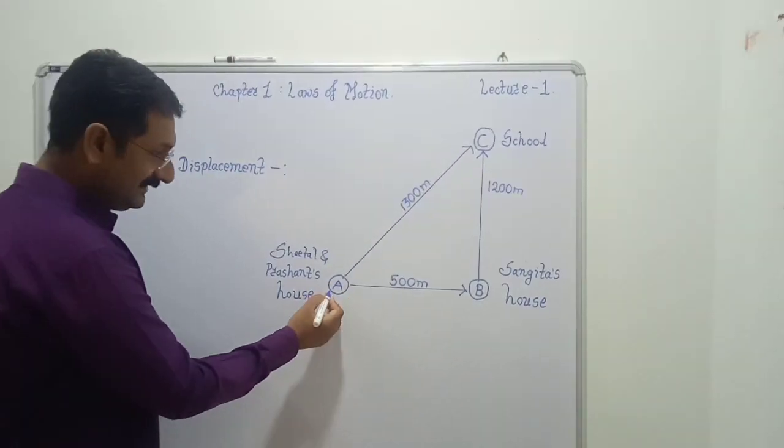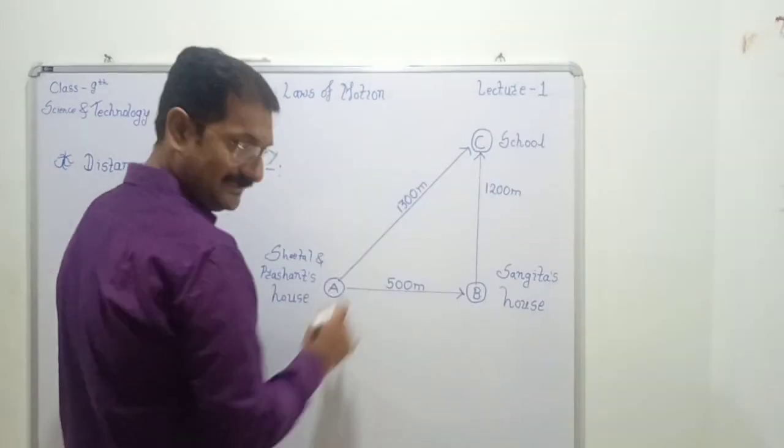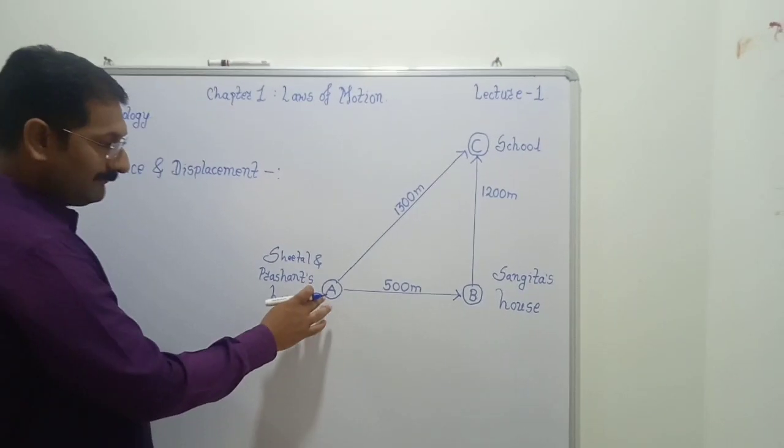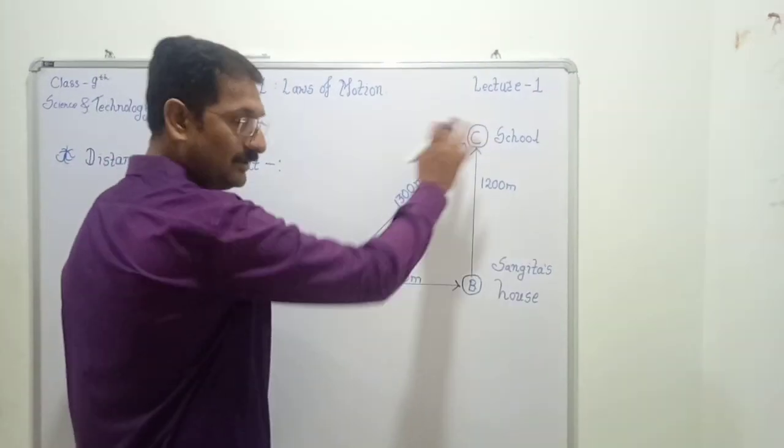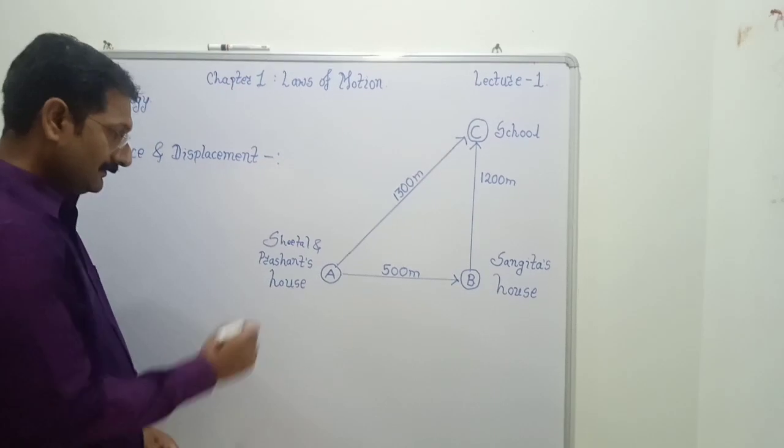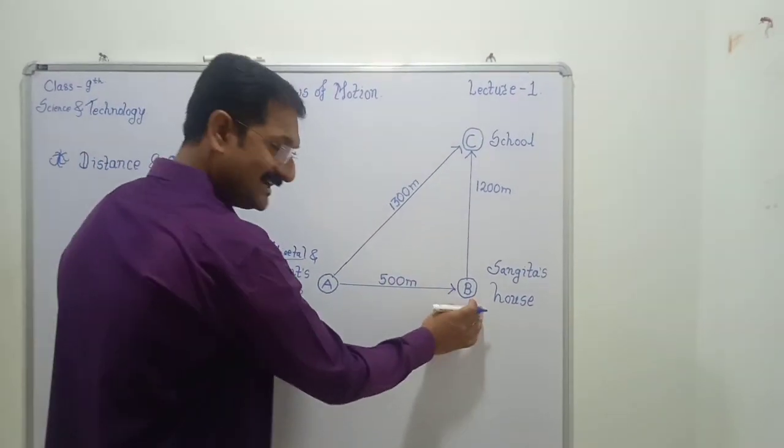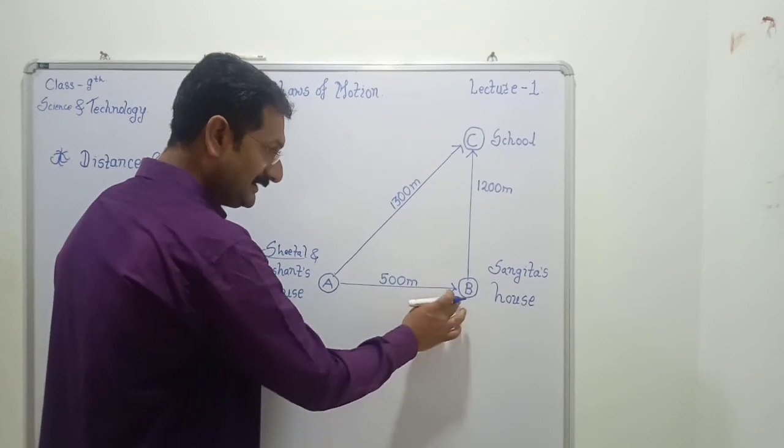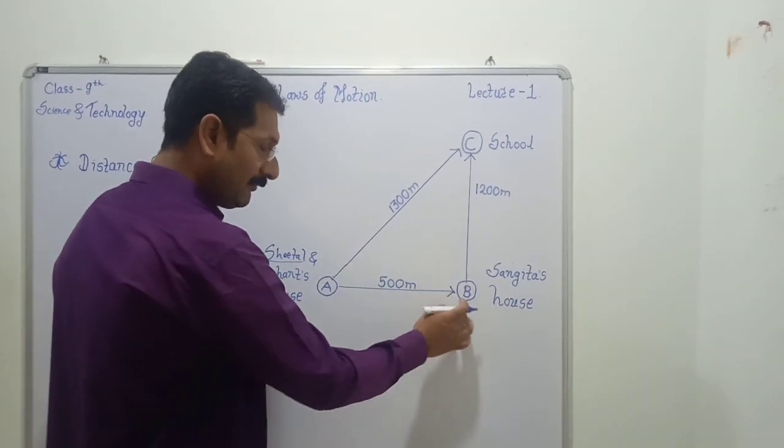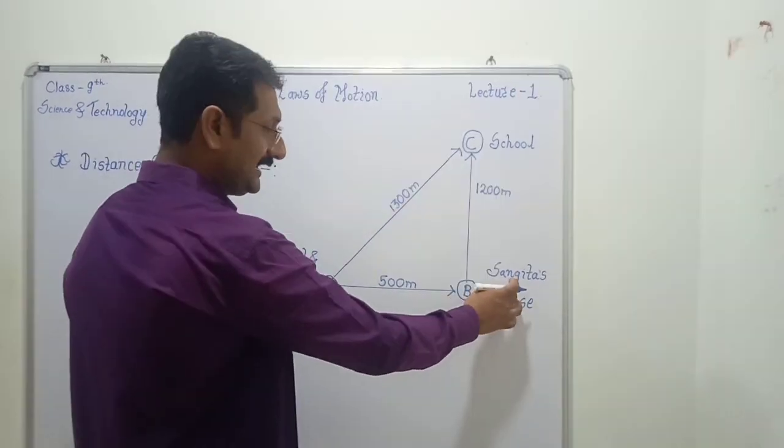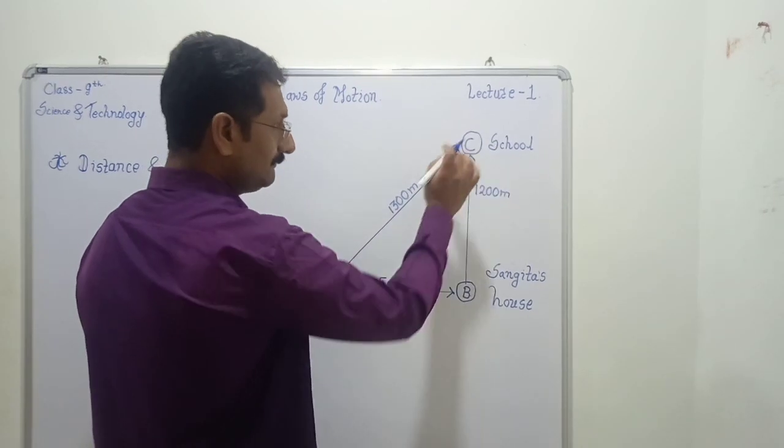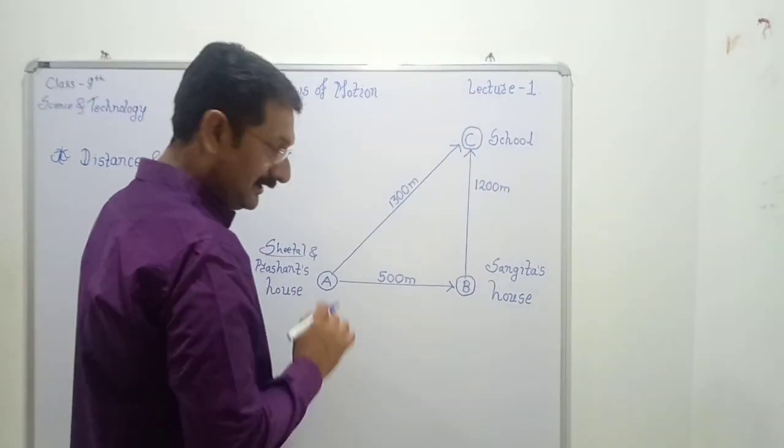Prashant went directly from point A to point C. Means he went from his house to school. But Shital went to Sangita's house. 500 meter distance this is. And from point B with Sangita,